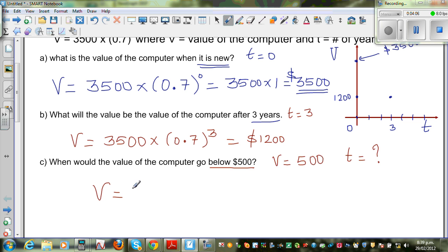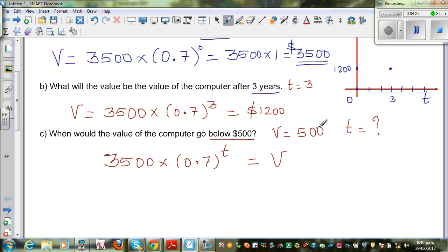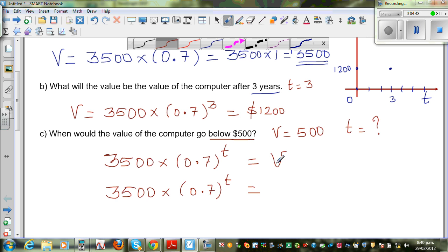So let me write the equation. Let me write the other way around. 3500 × (0.7)^t = V. The same equation because we want to make t the subject here. So we know V is 500. So 3500 × (0.7)^t = 500.